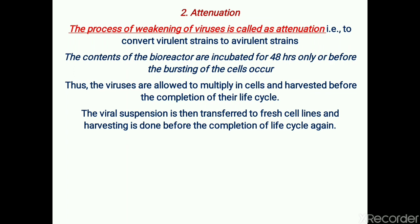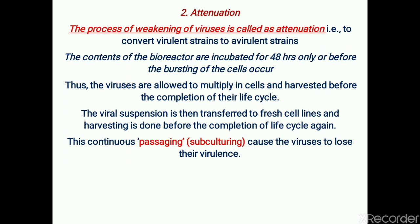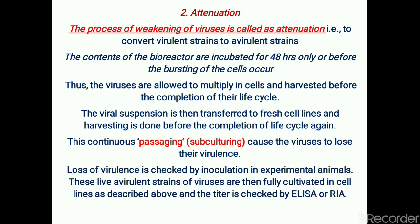The viral suspension is then transferred to fresh cell lines and harvesting is done before the completion of the life cycle again. This step is repeated several times. The key feature is that the viruses are harvested before the completion of the life cycle in the animal cell. This continuous process of subculturing is called passaging.